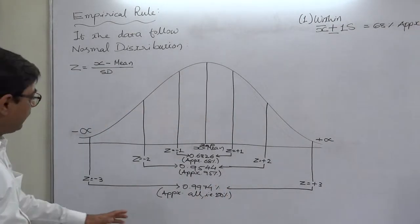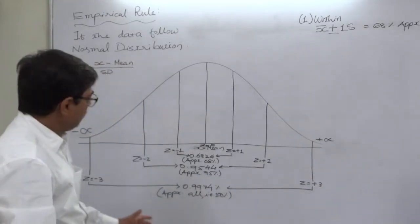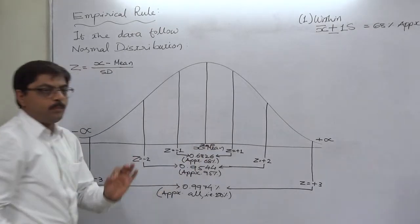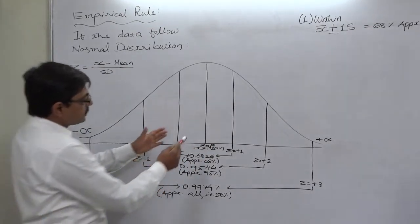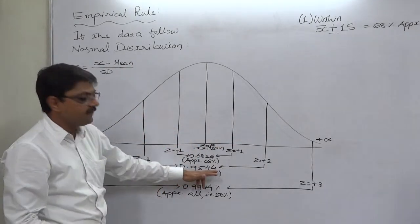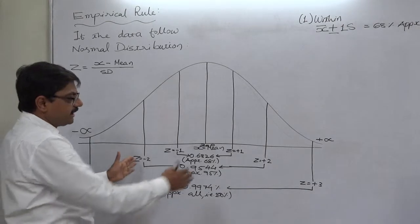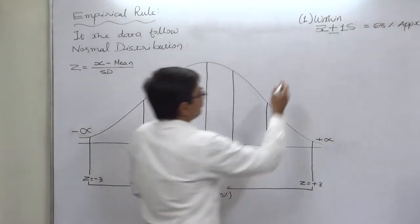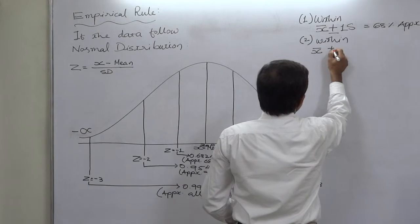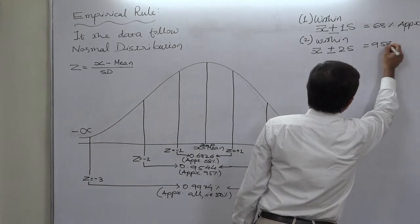Similarly, for Z = ±2, the area between Z=0 and Z=2 on either side is 0.4772. The summation of the area on both sides is 0.9544, meaning approximately 95% of values fall within mean ± 2 standard deviations.